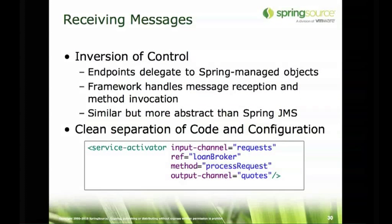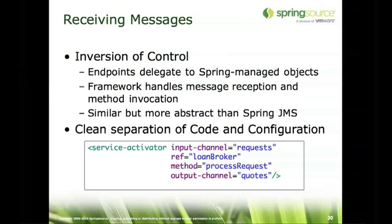That covers the different ways you can send a message. To receive a Spring Integration message, all you need to do is provide a model very similar to the JMS message listener container support. The only difference is that we have input channel and output channel instead of a JMS destination name, because we're talking about Spring Integration message channels. We still have ref and method as an option. Service activator is the most generic component — it's like the equivalent of a message-driven POJO for JMS. We want to invoke some bean, and if there's a result, send it to the output channel.